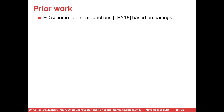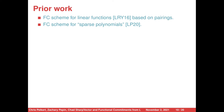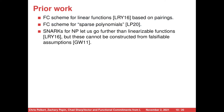As for functional commitment schemes, there are numerous. The functional scheme for linear functions was proposed in LRY16 based on pairings. Another functional scheme was proposed recently in LB20 for a class of functions the authors deemed sparse polynomials. One common theme amongst all functional commitment schemes based on falsifiable assumptions thus far is that they only work for classes of functions called linearizable — functions that are linear with respect to some fixed preprocessing of the message M. We can go further than linearizable functions using SNARKs for NP, but these cannot be constructed from falsifiable assumptions.